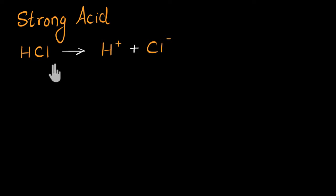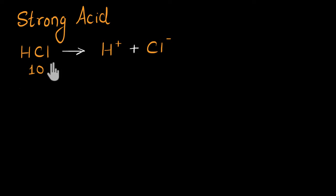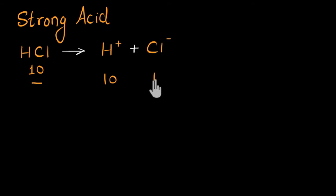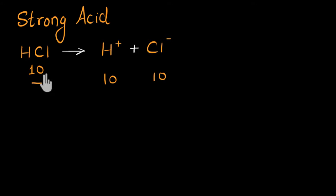But HCl is a strong acid, meaning it goes through complete dissociation. This means that if I take 10 molecules of HCl, all of the HCl molecules will break down and dissociate into its ions. I will have no HCl molecules left behind — in fact, I will get 10 H+ and 10 Cl−. A strong acid completely dissociates in an aqueous solution, and we no longer have any molecules of the acid present; we will only get its ions.